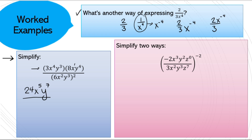Looking at the denominator, there's a lot going on, but the outer 2 is a power of a power applying to everything inside. Remember: 6 to the power of 2 is 36, not 12 — that's the most common mistake. x squared squared multiplies to x⁴, and y cubed to the power of 2 gives y⁶.